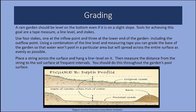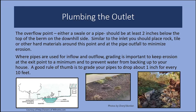Filling your rain garden with water also helps with plant selection, because you'll see where areas drain more quickly than others. The overflow or outflow point — either a swale or pipe — should be two inches below the top of the berm on the downhill side. Place rock, tile, or other hard materials around this point to minimize erosion and allow cleaning. Make sure your outflow pipe drops one inch for every 10 feet to ensure water is directed away from your home or other structures.